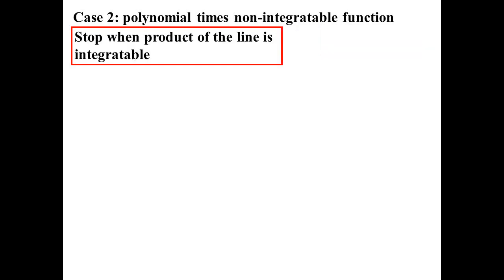Well what happens if you're multiplying it by something that actually doesn't integrate? In that case you stop when the product of the line, so when you read across the line, that product you can integrate. That's when you stop. So log X. So log X, and obviously the other function becomes one. Differentiate log X, I get one over X. Integrate one, I get X. Hang on. Multiply that together, I've got something I can integrate.